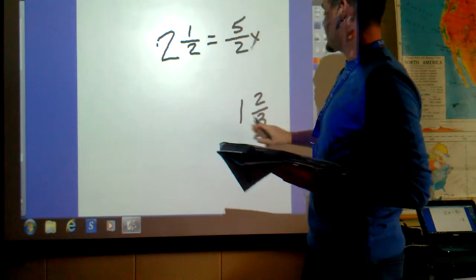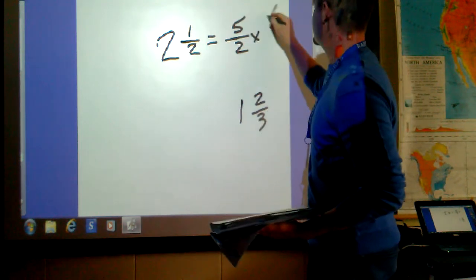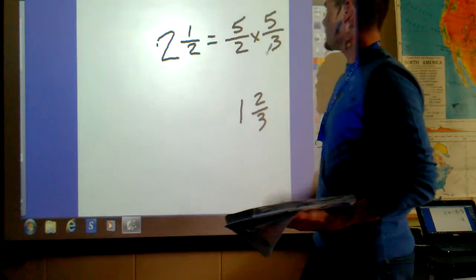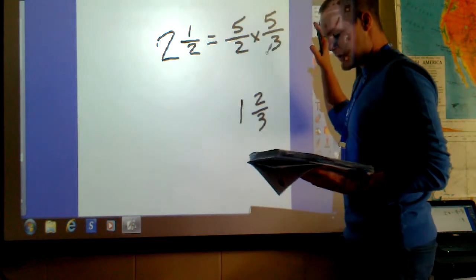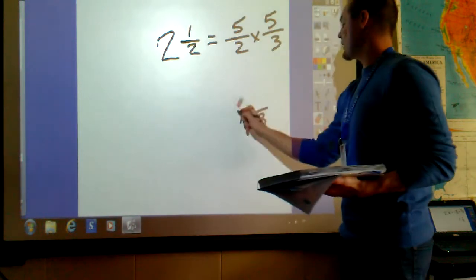And then they multiplied it by 1 and 2 thirds. Well, 1 times 3 is 3. Plus 2 is 5 thirds. They multiplied straight across, divided numerator by denominator, and got their answer.